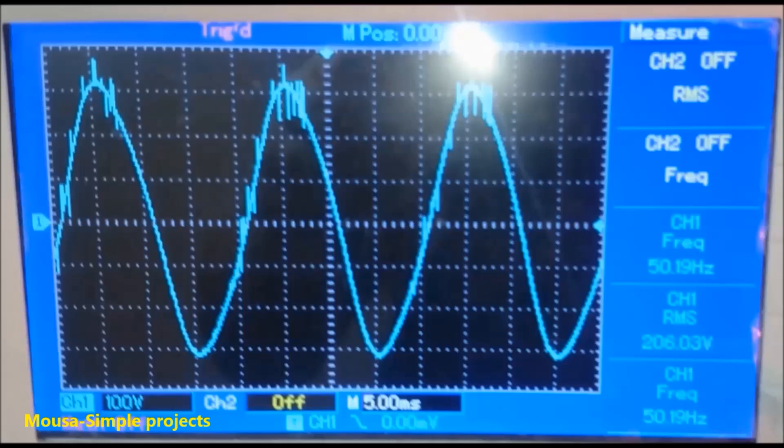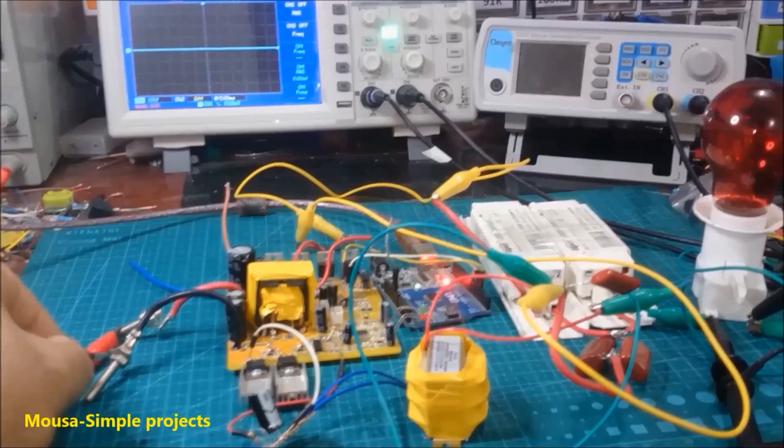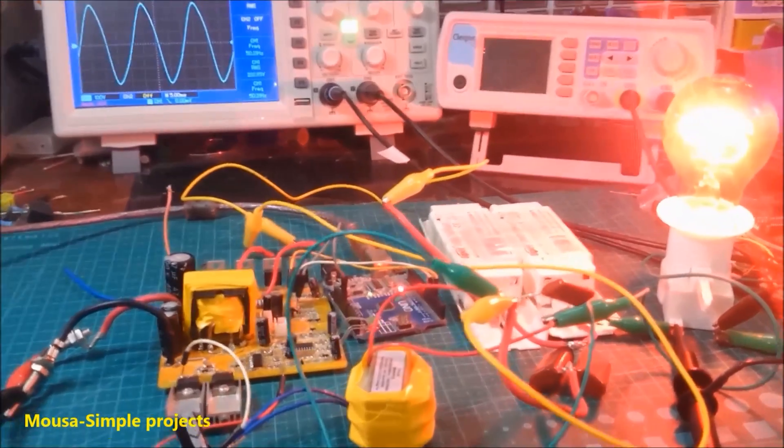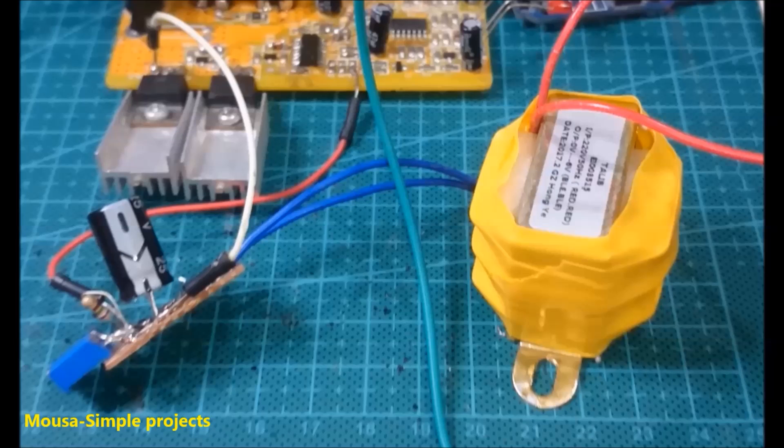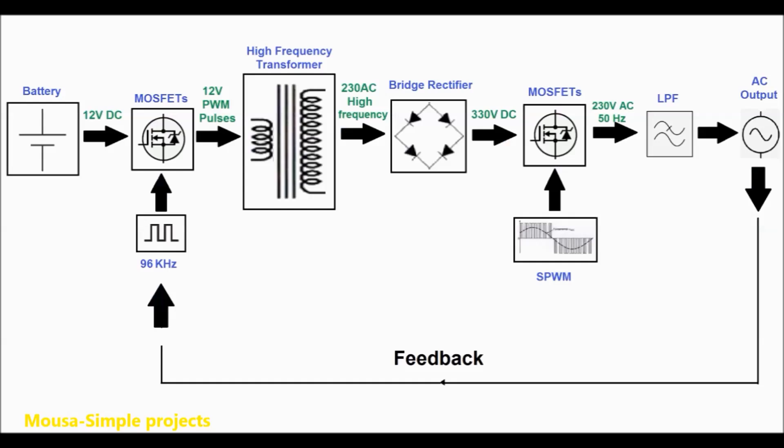So I put a 0.8 microfarad capacitor in the output, and the output became a clean pure sine wave. This transformer is a feedback loop connected to the feedback pin of the IC to make the output voltage stable.